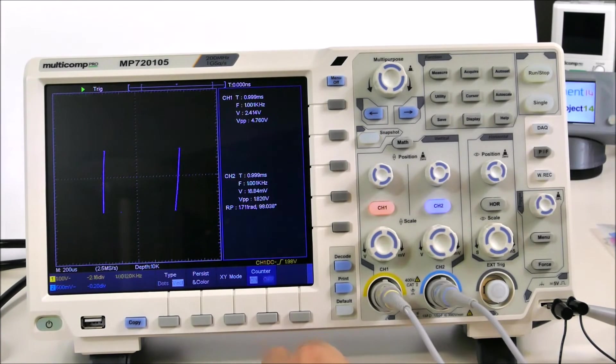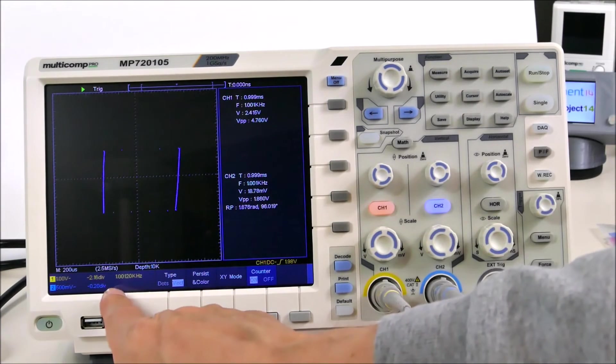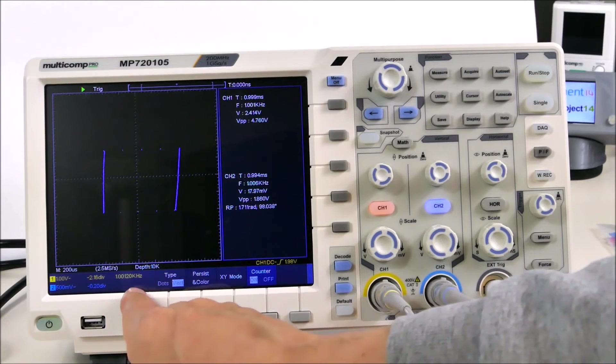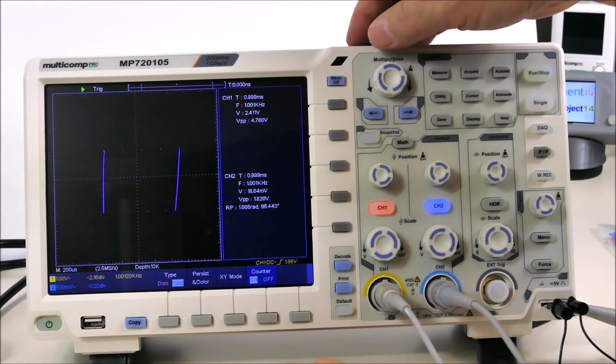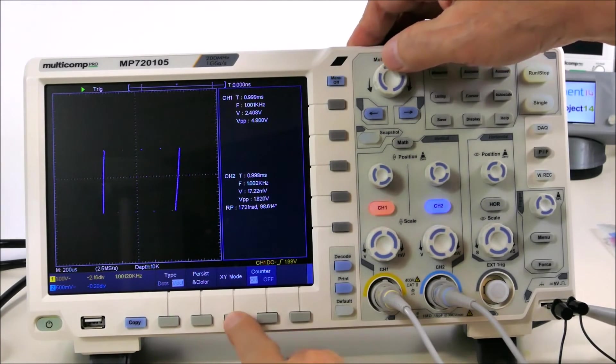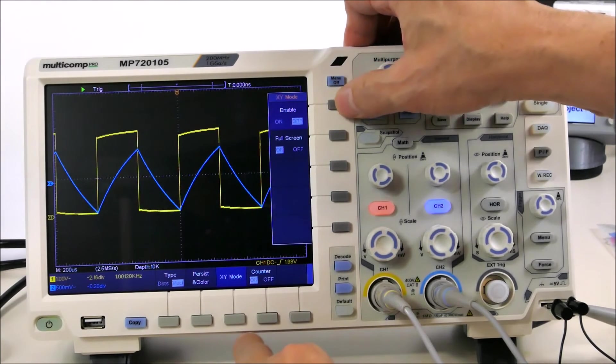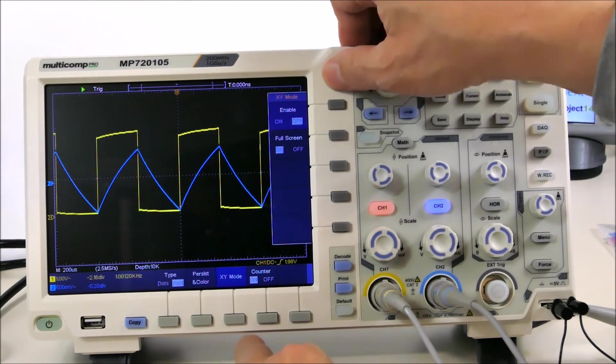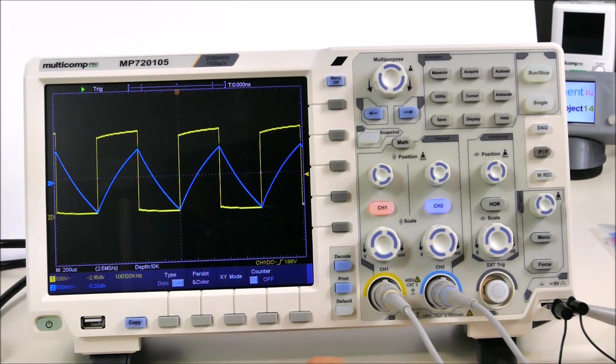So this button turns the counter on and off. And then the counter comes up here. It says that square wave is one kilohertz. It's got a built-in counter and it's got one, two, three, at least six digits of accuracy or resolution.